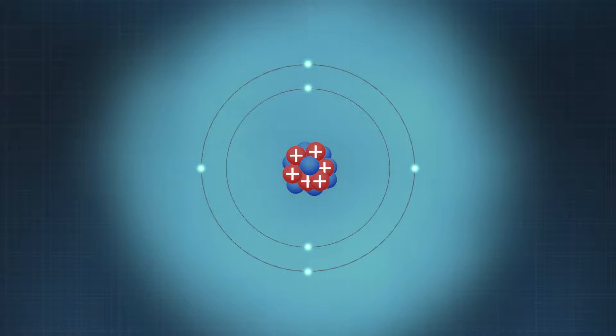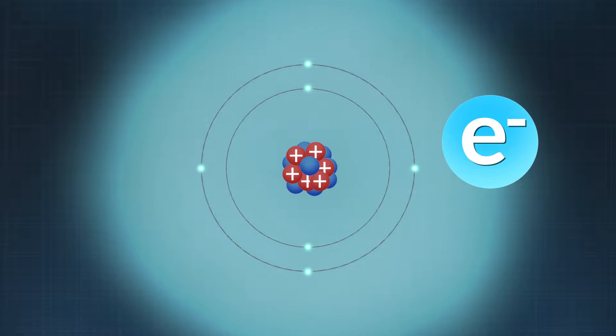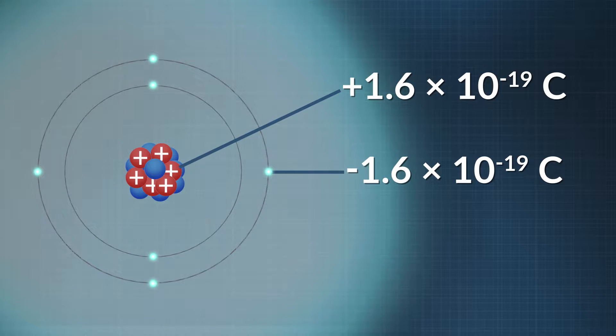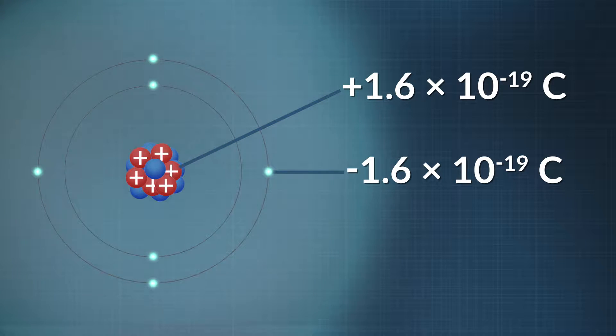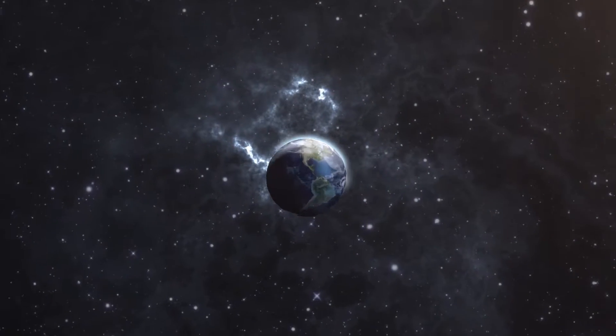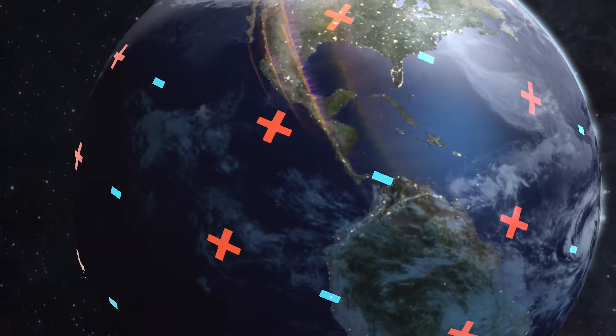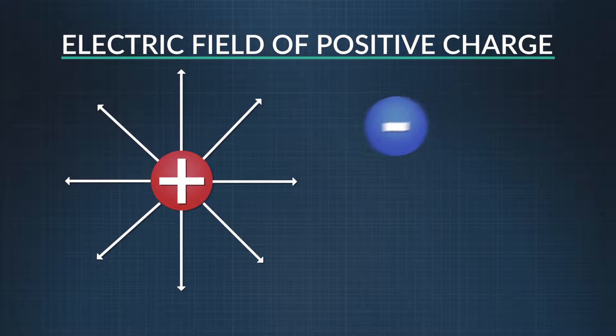Charge is a basic property of matter, like mass. Just like all matter weighs something, all matter has a charge, which can be positive, negative, or neutral. At the atomic level, protons have a positive charge and electrons have a negative one. The charges on a proton and electron are equal in magnitude and opposite in sign — they balance one another out, both having a charge of 1.6 × 10⁻¹⁹ coulombs. When an object's charges all balance out, that object is said to be neutral. The Earth is an example of a neutral object. Every charge creates a field around it, which we call an electric field. Other charges in the field will feel a pull if the charges are opposite, and a push if the charges are the same.